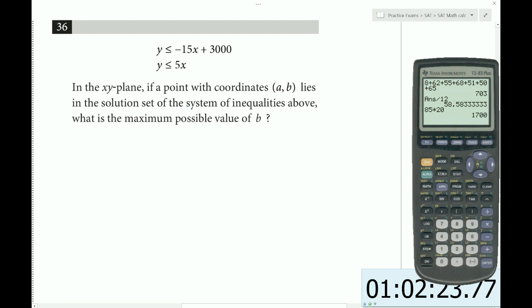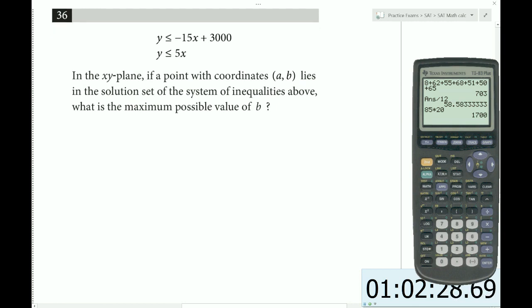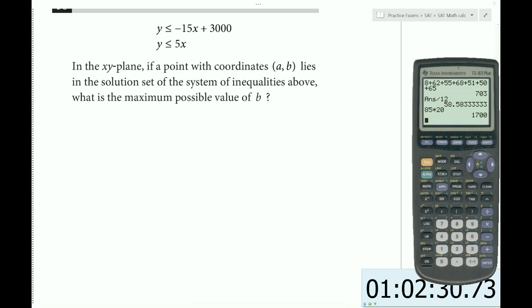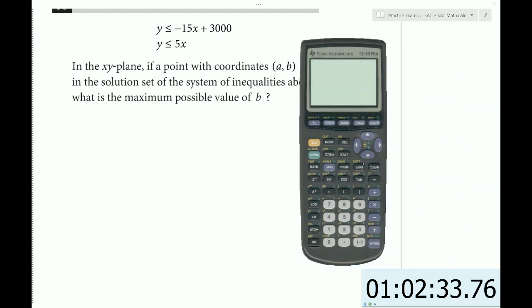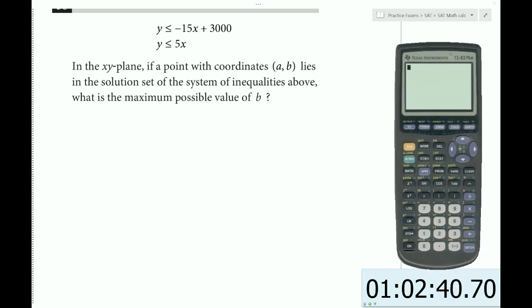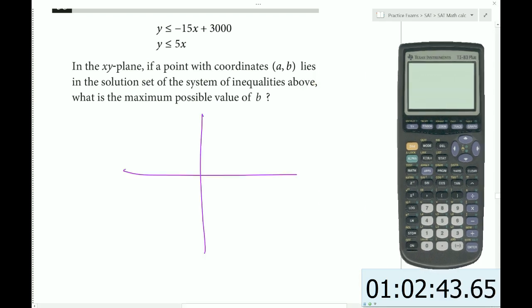In the xy-plane, if a point with coordinates a, b lies in the solution set, what is the maximum possible value of b? Since we have the calculator, we could graph them out. But theoretically, all we need to do is find the intersection point. Let's say one of them is like this, shading upwards, and the other one might be like this, again shading upwards. This is the critical point here, the intersection point. That's going to be your maximum or minimum of your solution set.